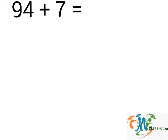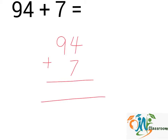94 plus 7. We will write down the question this way. Now, we will divide the numbers into columns — column 1 and 2.